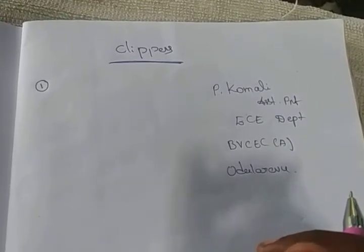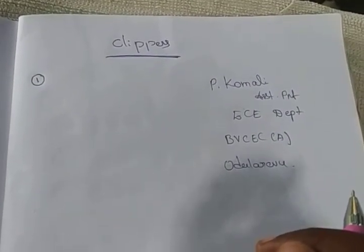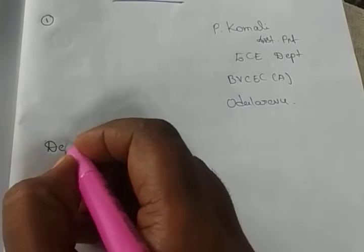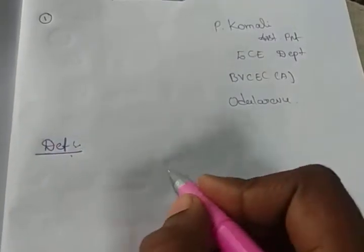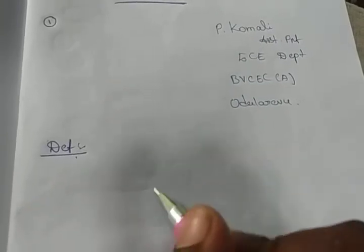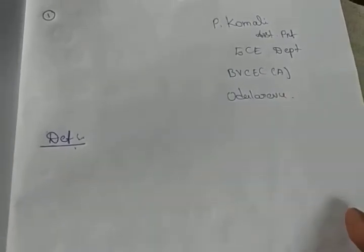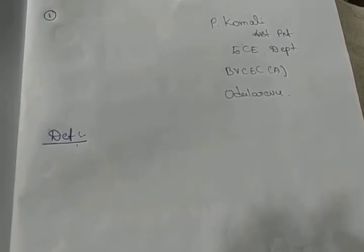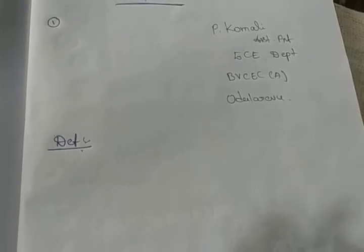Hello all, this is Kwamli from BVC Engineering College, Odell Revu. Today our topic is clippers. Clipper is a circuit which will slice some part from the waveform — that means which will remove the undesired part and transmit only the desired part. We can also call the clipper as voltage or current limiter, amplitude selector, or slicer.